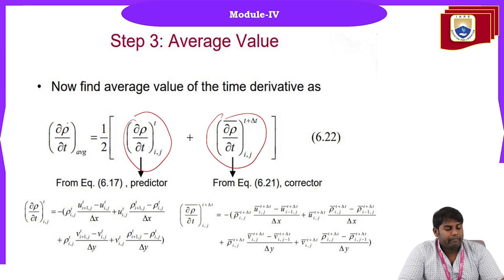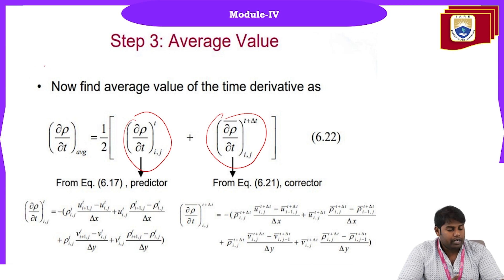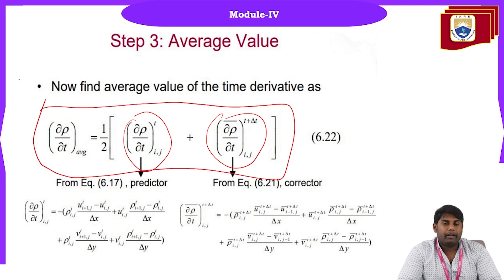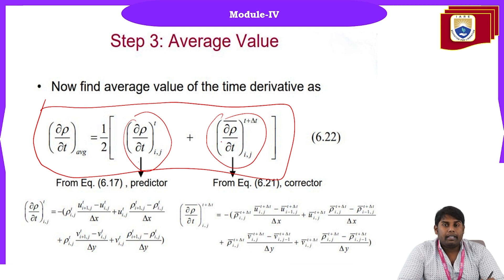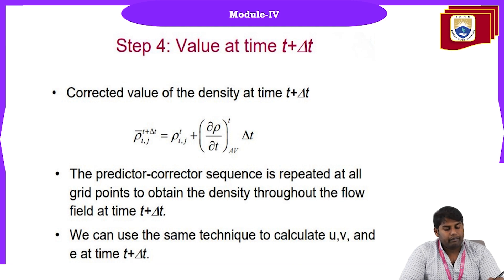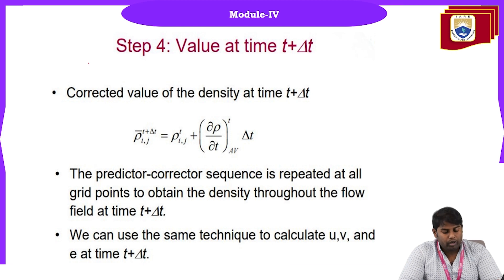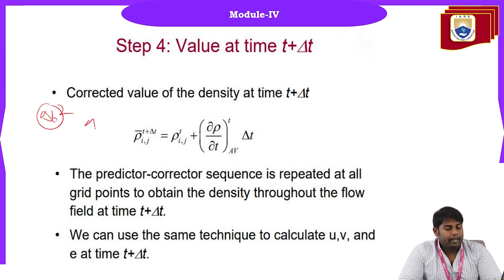This procedure is applied for all variables: ρ(t+Δt), u(t+Δt), v(t+Δt), and e(t+Δt). When employed, we obtain the average of the predictor (forward difference) and the corrector (backward difference) and substitute it into the update formula. The same technique applies for u-velocity, v-velocity, and internal energy, giving us order of accuracy O(Δt²) and O(Δx²).